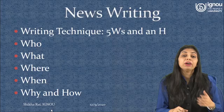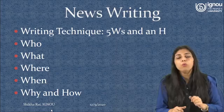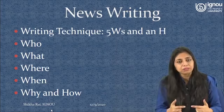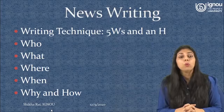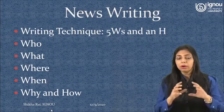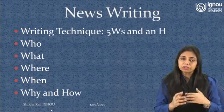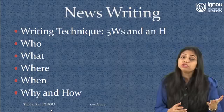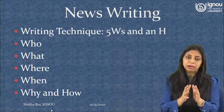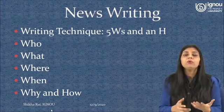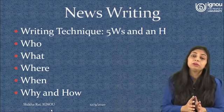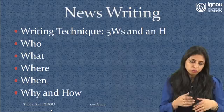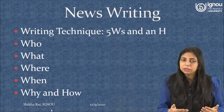Where is it — in the national capital, or some remote village near the sea? When has it happened — bringing us back to timeliness; the sooner you report the event, the better for you as a media person. Why and how are two factors where we get into the interpretation of an event — why it happened in a certain manner, how it took place, what could have been done to prevent it, and what could be done in future to ensure such events don't get repeated.